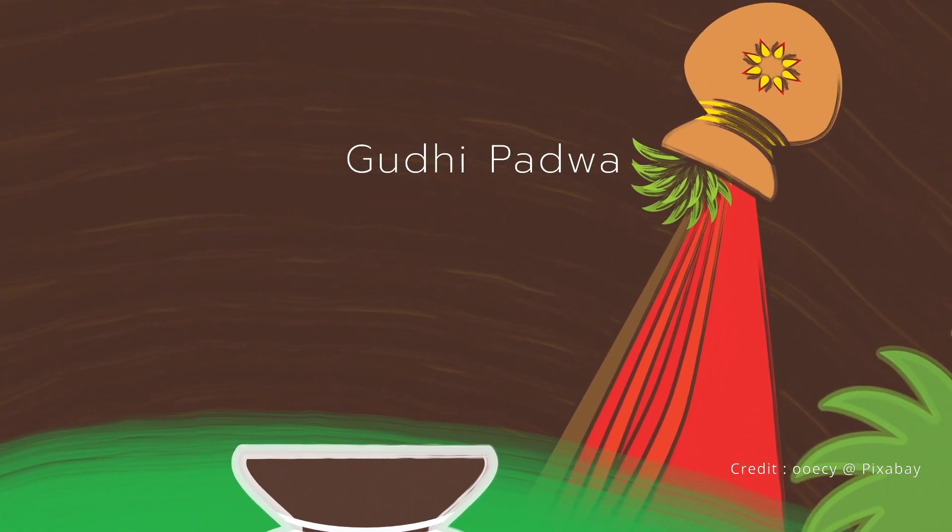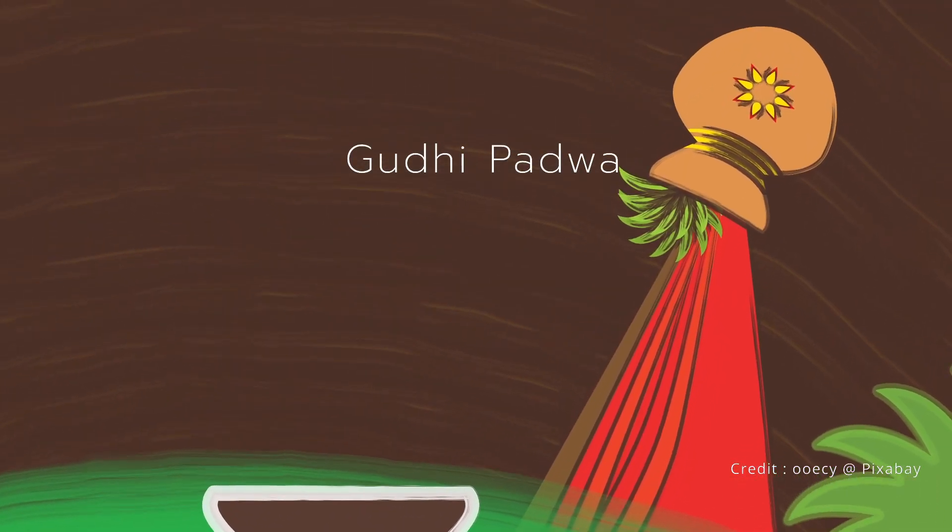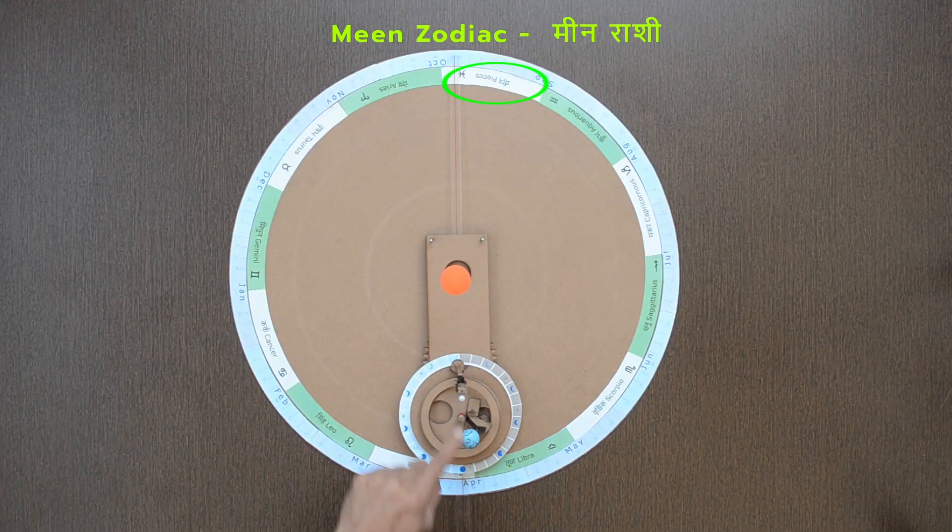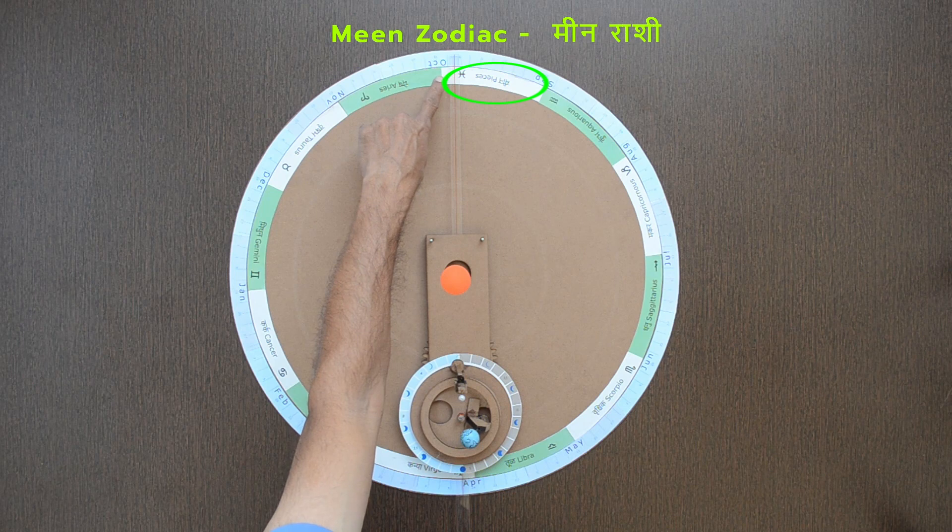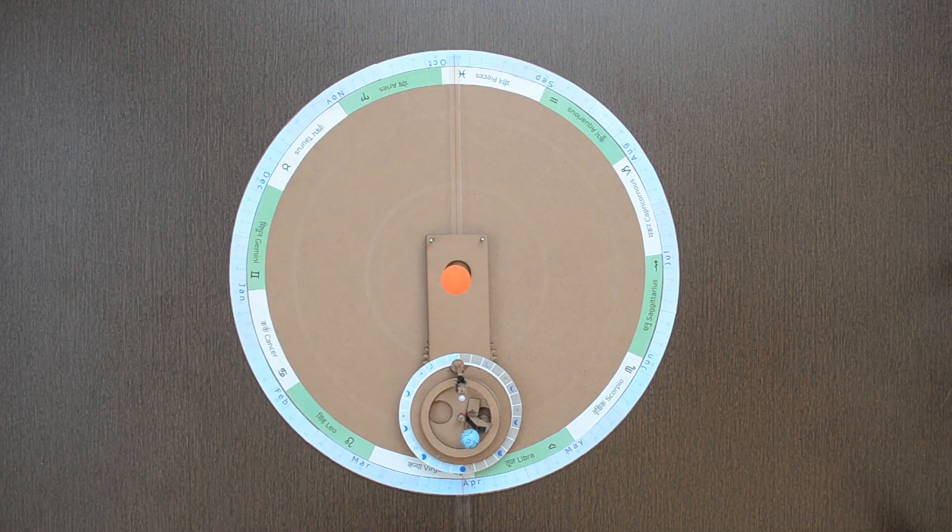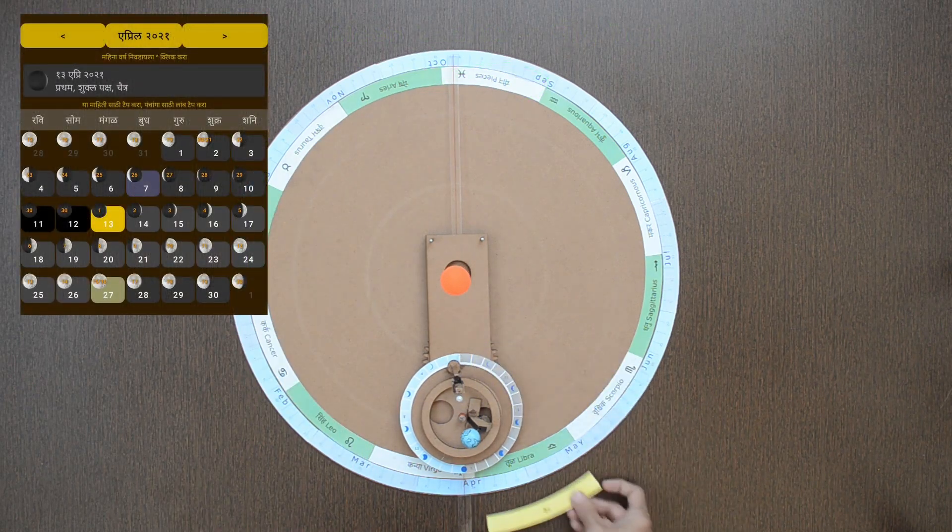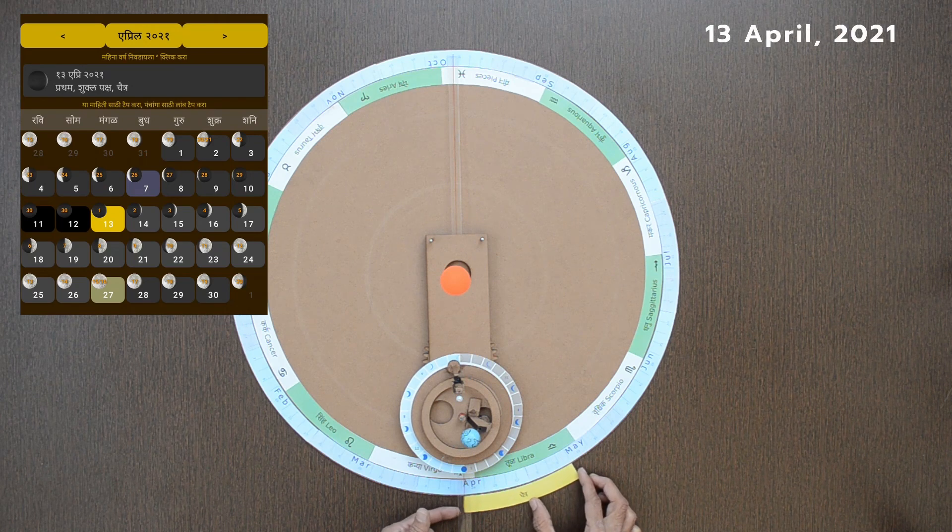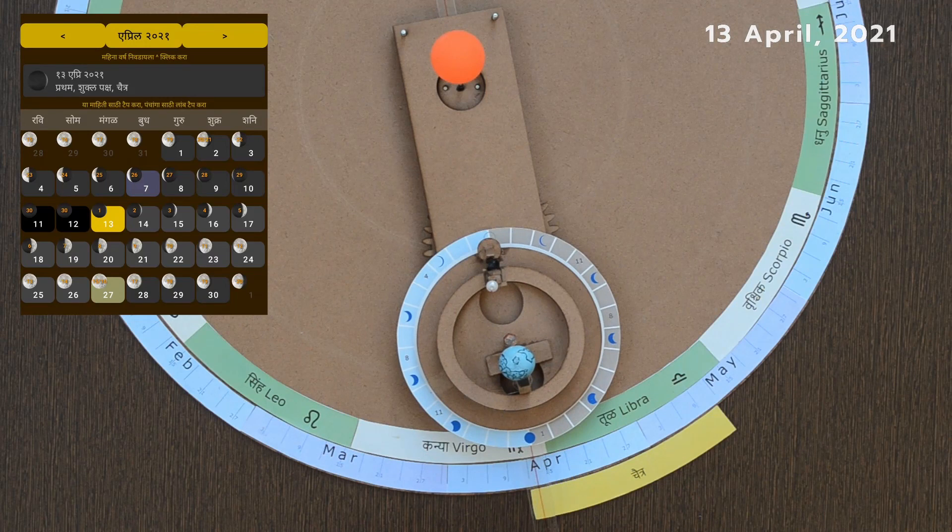We will start with Gudhipadva, a festival which marks the start of new year. When the sun is in Meen Rashi, first month Chaitra starts from the new moon phase, i.e. Amavasya. 13th April is the first day of Chaitra, also known as Chaitra Pratipada.